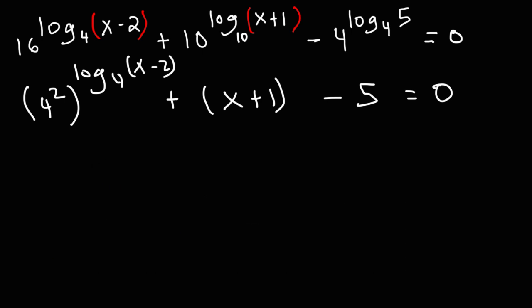Because we could switch the 3 and 4, we could therefore switch the 2 and the log. So instead of writing 4 squared raised to the log base 4 x minus 2, we can write 4 raised to the log base 4 x minus 2, and then all of that squared. So all we did, we just swap those two exponents, which we can do because 3 times 4 is the same as 4 times 3.